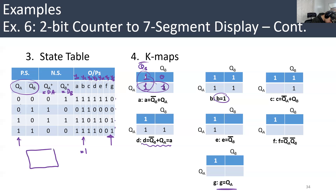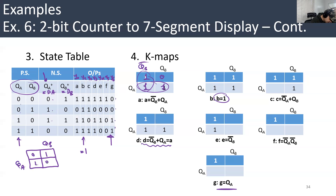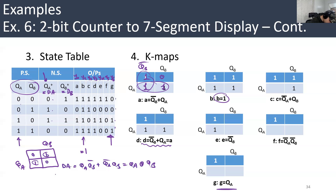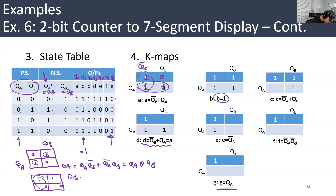For DA: Q+A is also DA. We don't need a new column because Q+ equals D. So Q+A equals DA and Q+B equals DB. So DA = QA·QB̄ + QĀ·QB, which is QA XOR QB. For DB: you have 1, 0, 1, 0, 1, 0, 1, 0 — one group — so DB = QB̄.